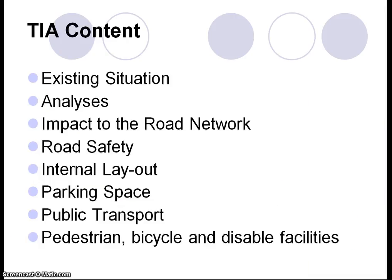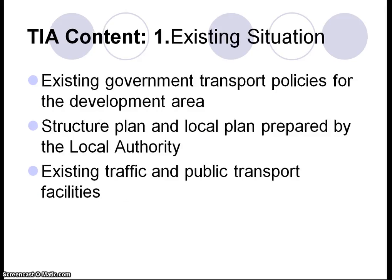The report content usually consists of the existing situation with a brief explanation and analysis, impact on the road network, road safety, internal layout, parking space, public transport, pedestrian, bicycle, and disabled facilities. It also includes existing government transport policies for the development area — for example, in Putrajaya the policy is 30% by private transport and 70% by public transport — as well as the structure plan, local plan, and existing traffic and public facilities.